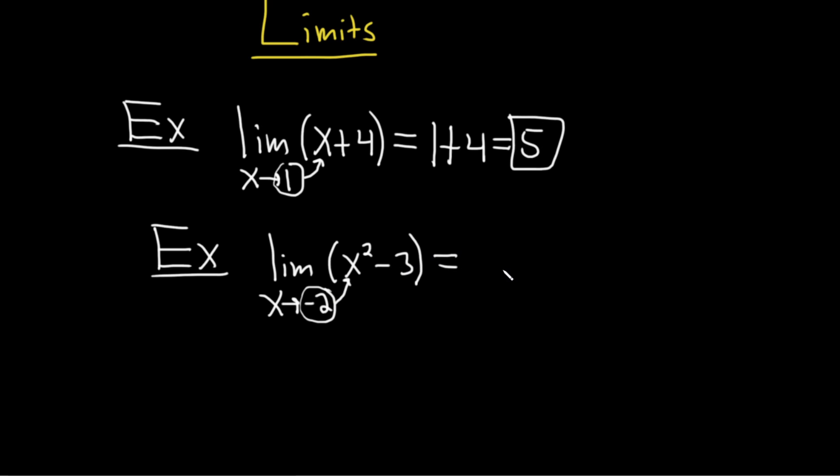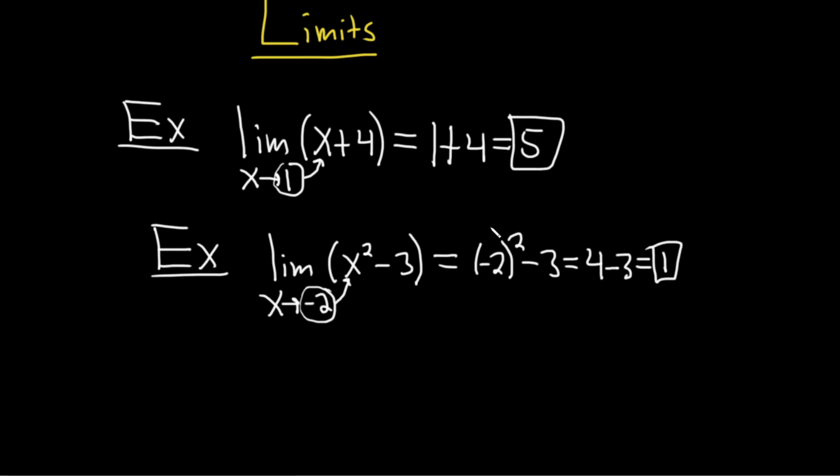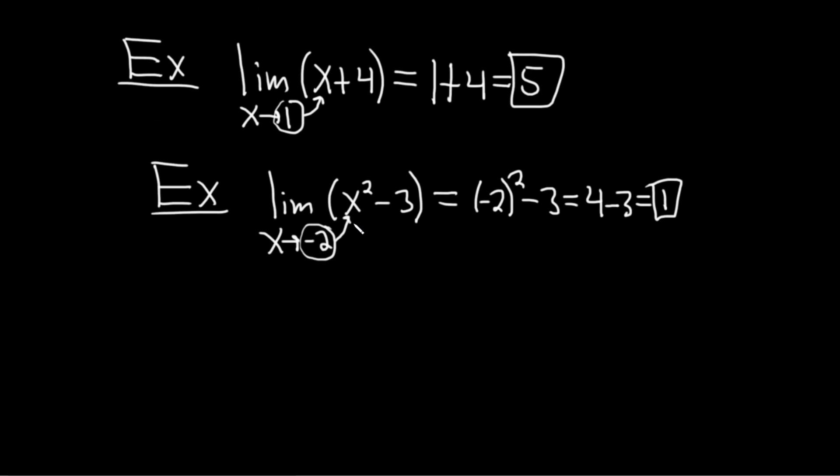So here, plugging in negative 2, again, you drop the limit sign, negative 2 squared minus 3. Whenever you square a negative like this, you just get a positive. So it's 4 minus 3, and that's equal to 1. Boom. There it is. So really simple, and that always works as long as you get an answer. So let's do an example where it won't work.